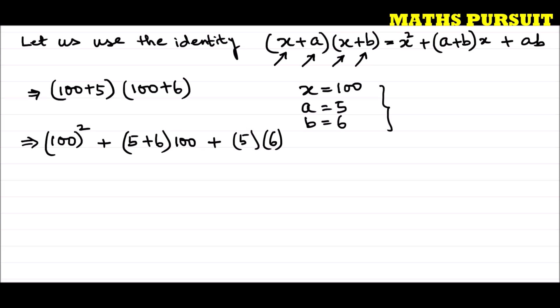I have just considered these figures keeping in view of this identity: (x + a)(x + b) = x² + (a + b)x + ab. So if we solve (100 + 5)(100 + 6), we get 100² + (5 + 6)(100) + (5)(6).